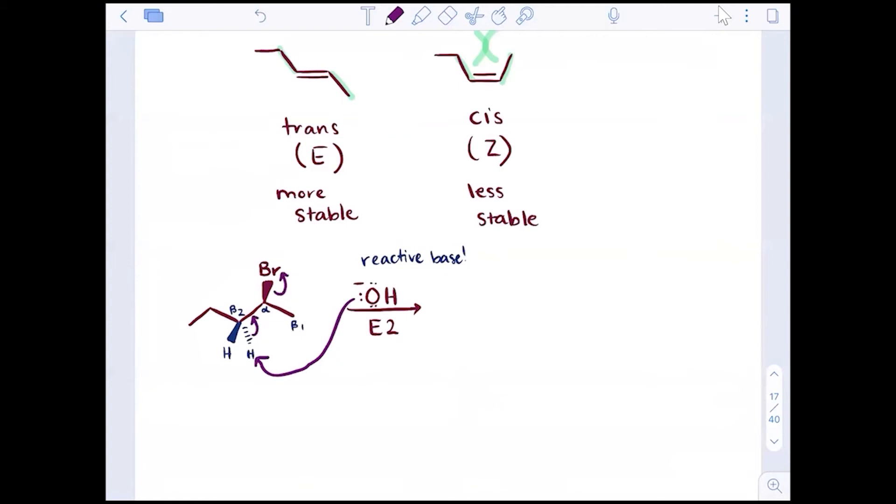And so what we get from that is the trans. Notice how the two R groups are on opposite sides. I'll highlight them here. So they end up on opposite sides in this concerted mechanism.